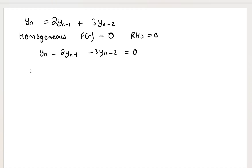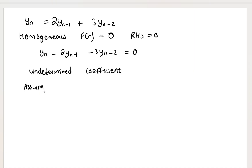We're going to use the method of undetermined coefficients. With this method, we must assume a trial solution of the form y sub n equals A multiplied by λ to the power of the independent variable n.